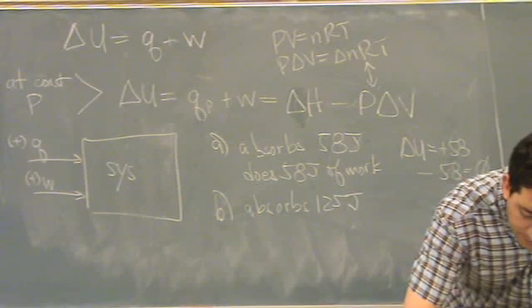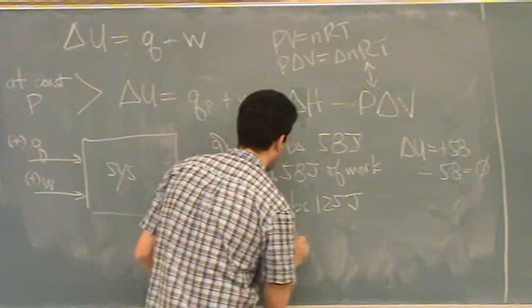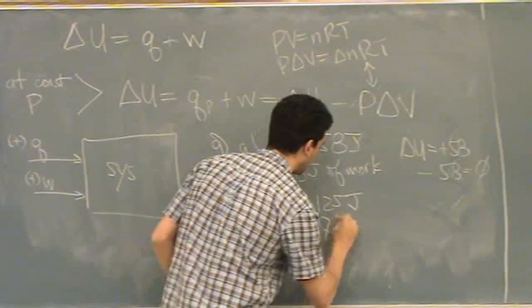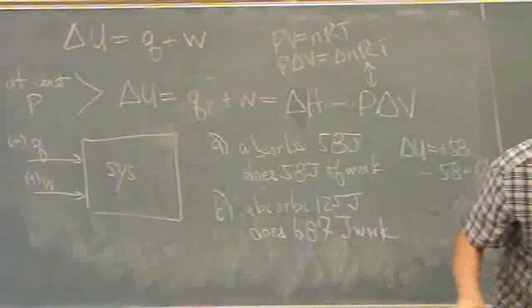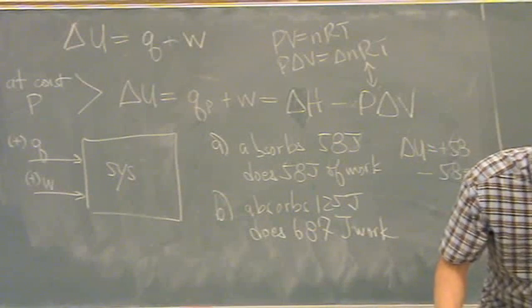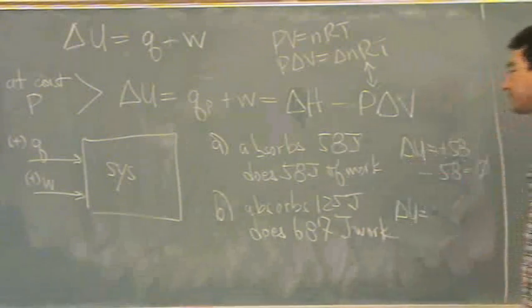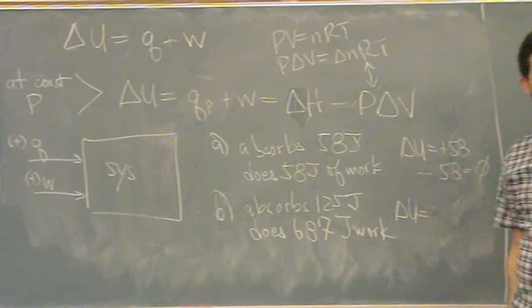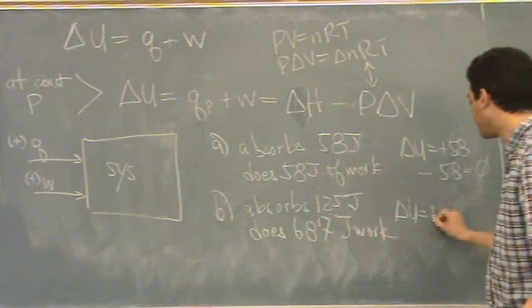Absorbs 125 joules. And then it does 687 joules. Does 687 joules work. Okay. Let's look at that. Alright. So this, delta U, is equal to? What's the Q term? Yeah. Absorbs. It's going into the system. 125.